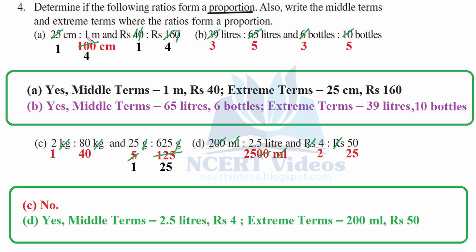We write the middle and extreme terms only for those found to be in proportion. Part a: Units are not the same, so convert 1 meter into 100 centimeters. Centimeters cancel: 25 fours are 100, giving 1 is to 4. Rupees cancel and zeros cancel: 1 four is 4 and 4 fours are 16. The ratios are equal — in proportion. Middle terms are 1 meter and rupees 40; extreme terms are 25 centimeters and rupees 160.